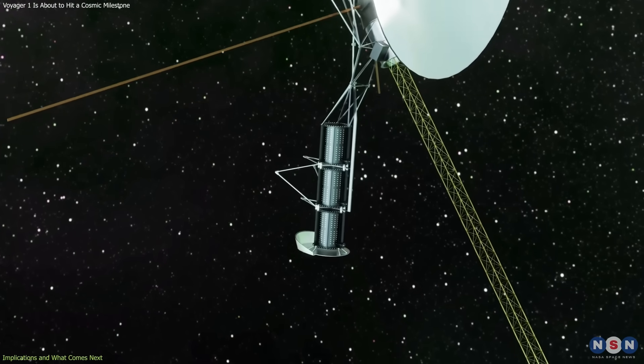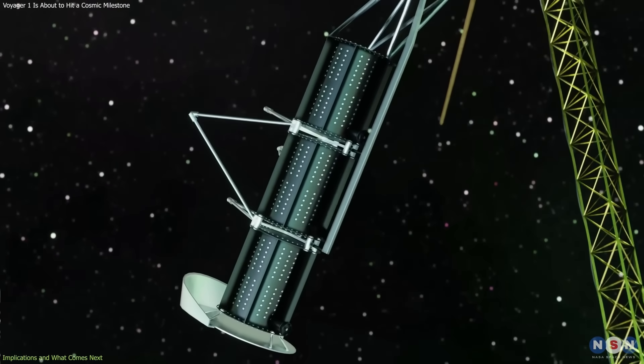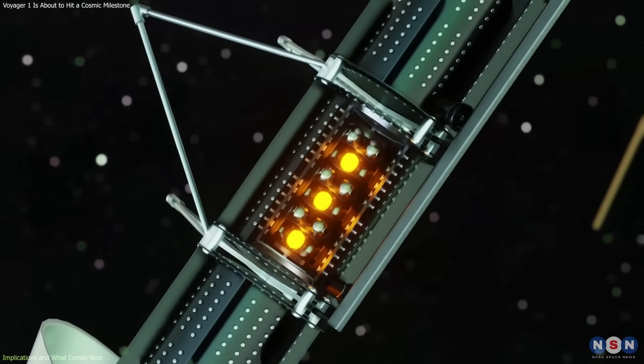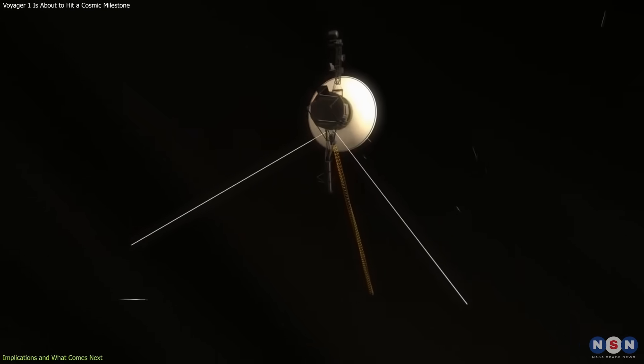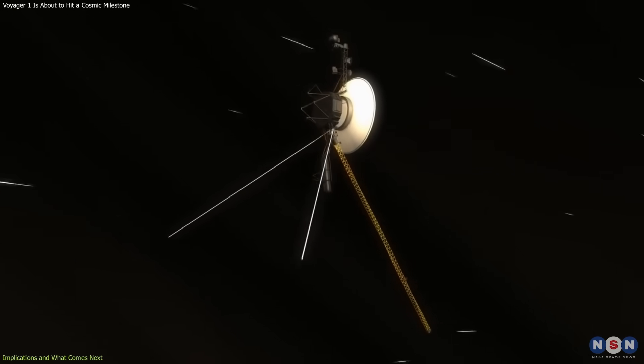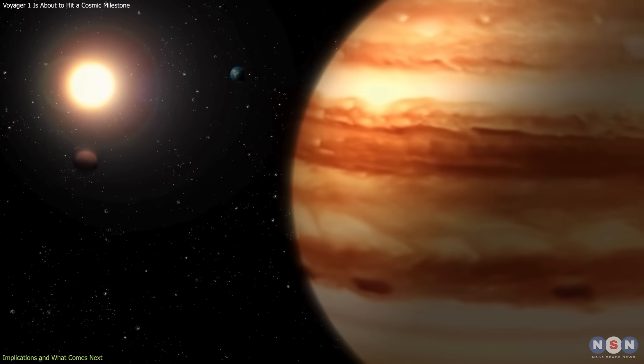NASA expects to operate Voyager 1 for as long as it can power at least one instrument. By around 2036, its energy output will drop too low to sustain communication. When that happens, the spacecraft will continue its journey silently, drifting outward at about 3.6 astronomical units per year, roughly the distance from the Sun to Jupiter annually.